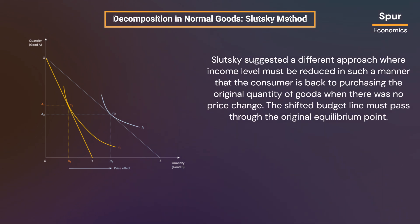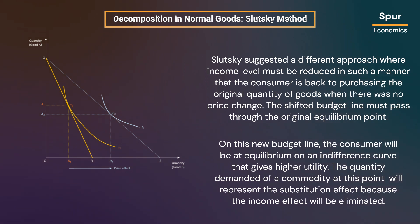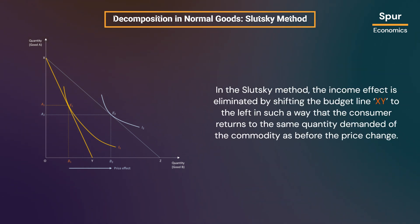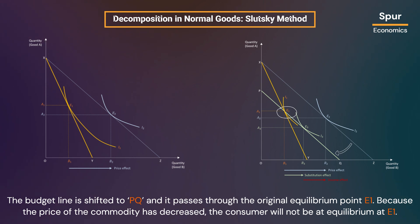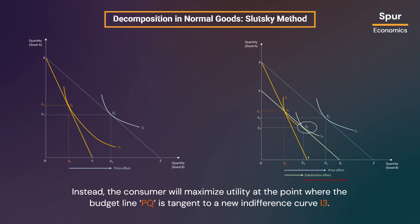Slutsky suggested a different approach where income level must be reduced in such a manner that the consumer is back to purchasing the original quantity of goods when there was no price change. The shifted budget line must pass through the original equilibrium point. On the new budget line, the consumer will be at equilibrium on an indifference curve that gives higher utility. In the Slutsky method, the income effect is eliminated by shifting the budget line to PQ in such a way that it passes through the original equilibrium point E1. Because the price of the commodity has decreased, the consumer will not be at equilibrium at E1; instead, the consumer will maximize utility at the point where budget line PQ is tangent to a new indifference curve I3.